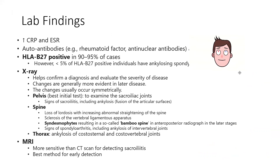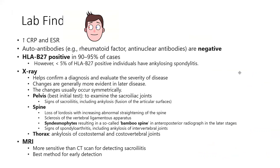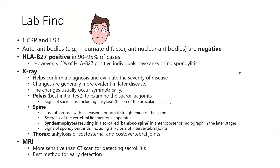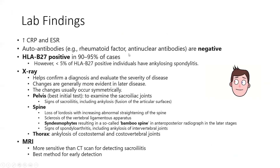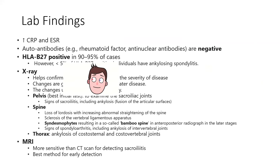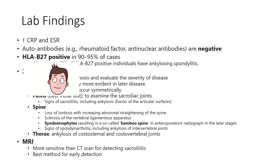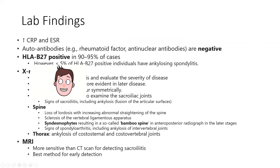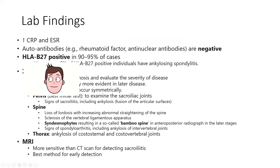Lab findings include elevated CRP and ESR — inflammatory markers. Auto-antibodies are not seen, so rheumatoid factor and anti-nuclear antibodies will be absent. HLA-B27 is positive in most cases, but importantly, being HLA-B27 positive does not mean you will get the disease — many HLA-B27 positive people never develop AS.